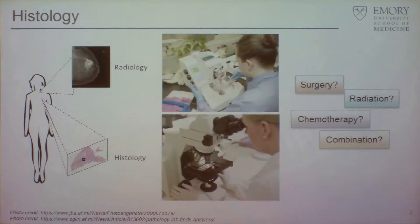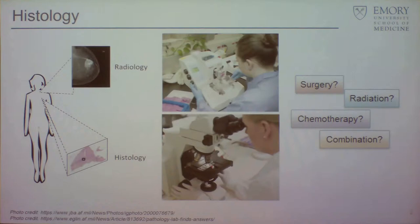So first of all, what is histology? Histology is the art and science of looking at tissues and figuring out what type of tumor someone has and things like that. In this case, let's say this is a breast tumor.